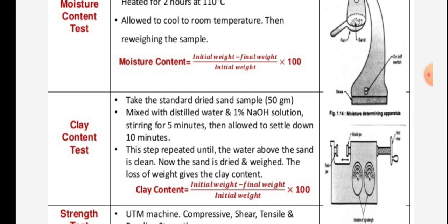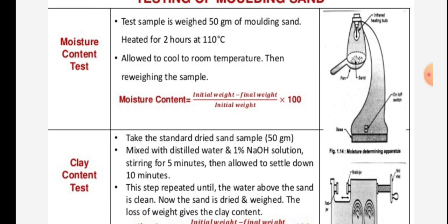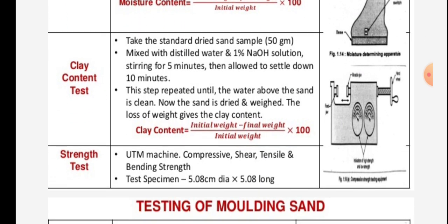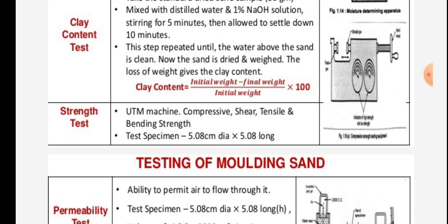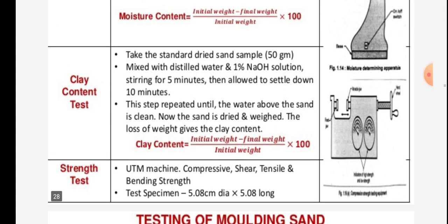The moisture determining apparatus is shown in the figure on the right-hand side. Clay content test: take a standard sand sample of 50 grams, mixed with distilled water and 1% NaOH solution. Stir for 5 minutes, then allow to settle for 10 minutes. This step is repeated until the water above the sand is clean. The sand is then dried, and the loss of weight gives the clay content. Clay content equals initial weight minus final weight, upon initial weight, into 100. The clay content test apparatus is shown in the figure.